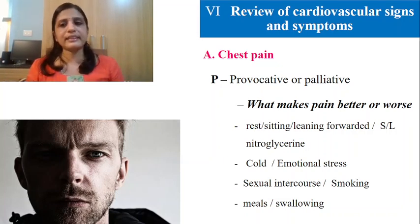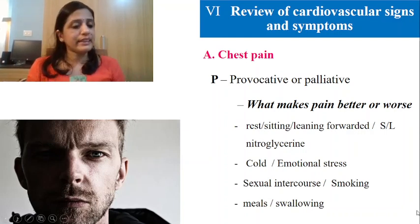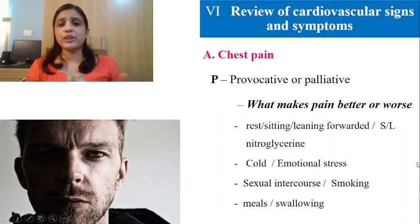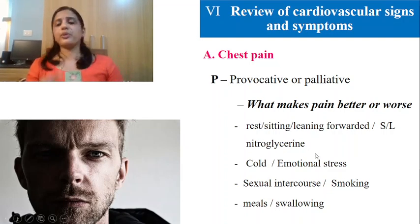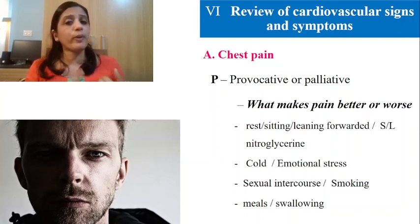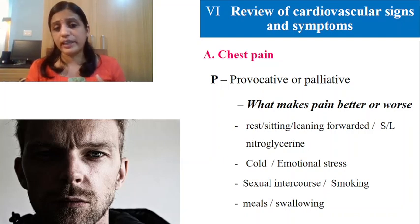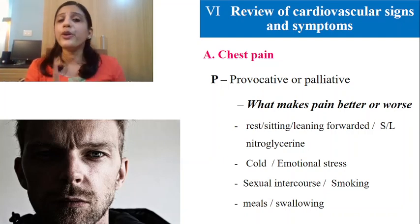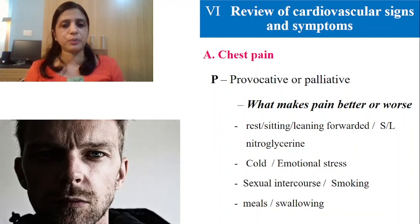Section six is the review of cardiovascular signs and symptoms. We use the PQRST framework. P stands for provocative or palliative, Q for quality, R for radiation, S for severity and associated symptoms, and T for timing and duration. For chest pain, the first thing to ask is the provocative or palliative factor.